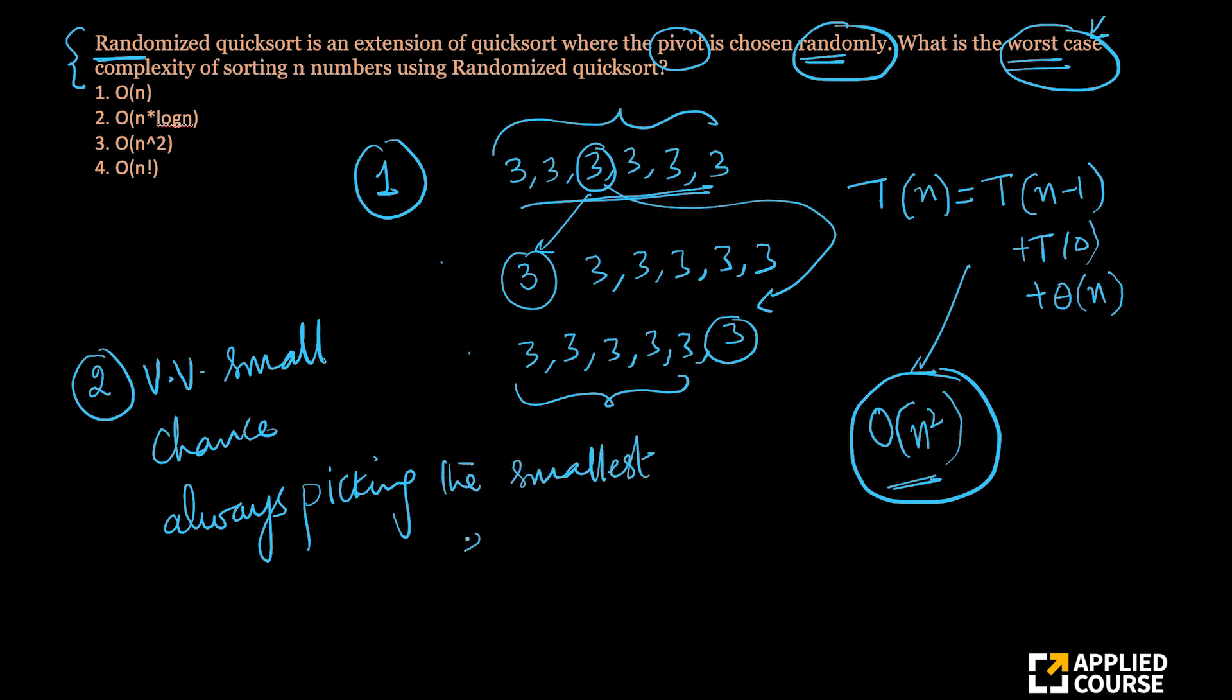The smallest element, you're always picking the smallest element as your pivot. Of course, the probability of that happening is extremely small, but still there is an extremely small amount of probability.